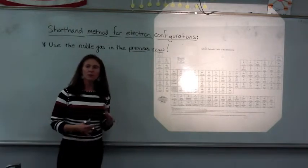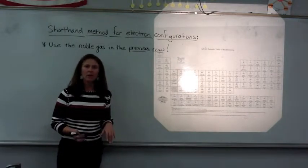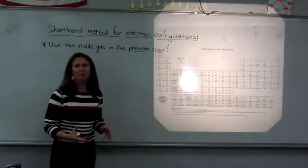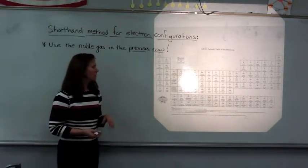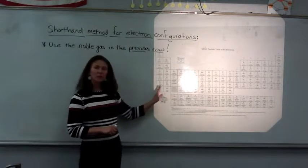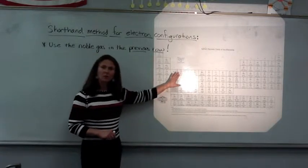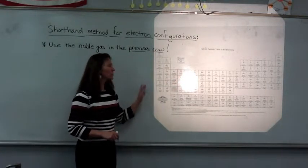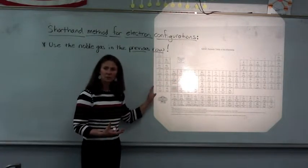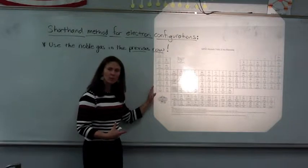I just wanted to show you a quick little example on how to do a shorthand method for electron configurations. I apologize for the glare on the whiteboard here, but I really wanted to show you a picture of the periodic chart so you could follow the process.